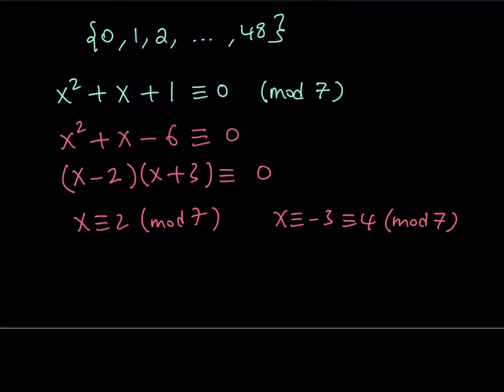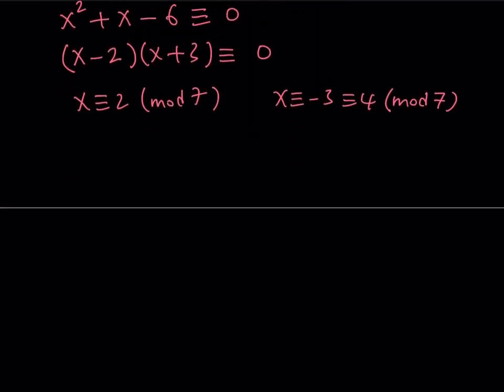Let's start with x ≡ 2 (mod 7). So if x is congruent to 2 mod 7, that means that x is 2 more than a multiple of 7. So I can write it as x = 2 + 7k, where k is an integer. Now what I'd like to do next is take this expression and plug it into my original congruence.